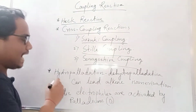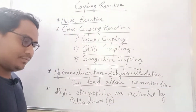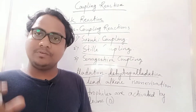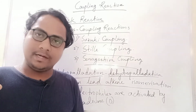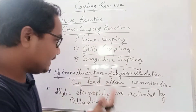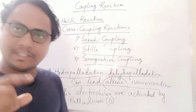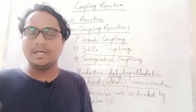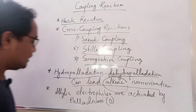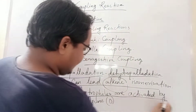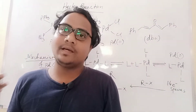The next important topic — which comes only in the NET exam — is hydro-palladation and dehydro-palladation, which can lead to alkyne isomerization. If you use a palladium catalyst, it will generate a hydro-palladium species, then elimination occurs and the double bond shifts — meaning alkyne isomerization, or shifting of the double bond from one position to another using palladium catalyst.